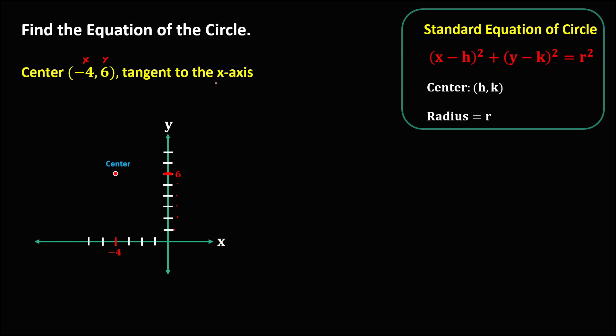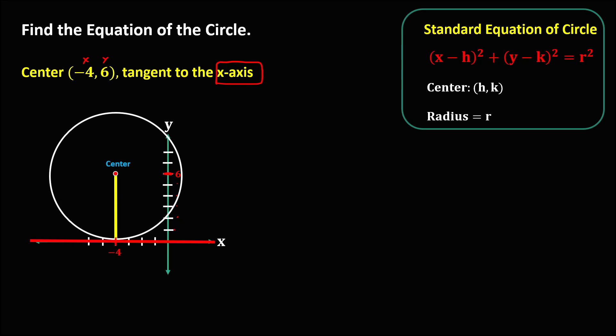Since tangent to the x-axis, and this is the x-axis, the circle touches this line. To find the radius, we go from the center to the tangent line. Counting from center to tangent line: 1, 2, 3, 4, 5, 6 — so the radius is equal to 6.